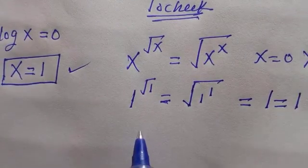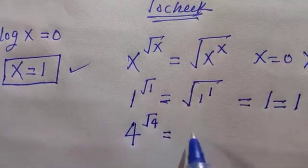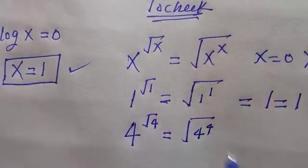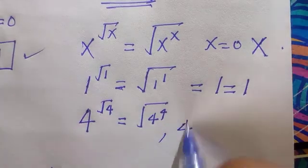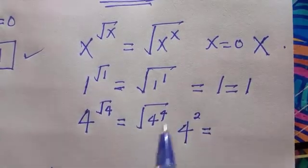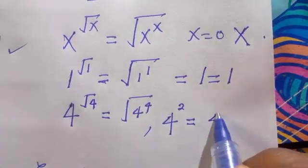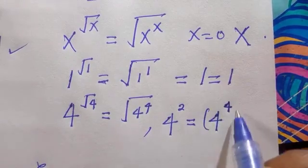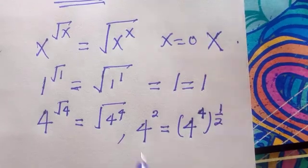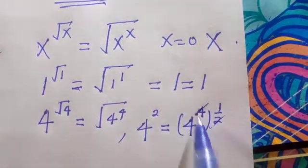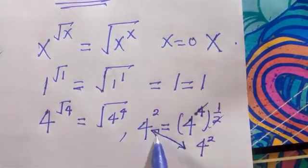For the last one, which is four, we have four raised to root four equals root four to the power four. For this, we have it as four to the power two, which equals 16. By transforming this, we can have four to the power 4 over 2, or four to the power two. We can also express it as 4 to the power 4, which is 256, then we take the square root, which is 16. Two can go into four two times, so we have four to the power two. This shows that x equals four also satisfies this problem.